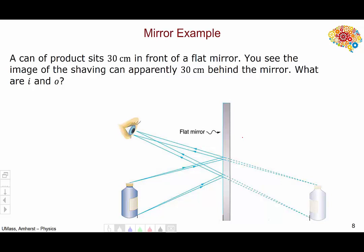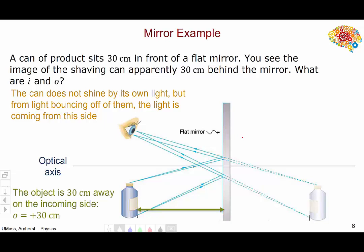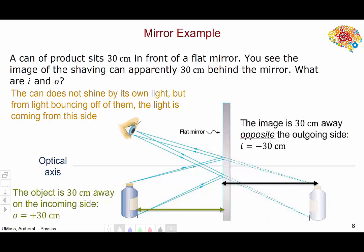For the mirror example: a can of bathroom product sits 30 centimeters in front of a flat bathroom mirror, and you see the image of the can apparently 30 centimeters behind the mirror. We define the optical axis perpendicular to the mirror. The can reflects light coming from the left, so the object is on the same side as the incoming light — the object distance is positive: o = +30 centimeters. The image, however, is not on the side of the outgoing light, because light bounces back the way it came. The image is on the opposite side, so the image distance is negative: i = −30 centimeters.